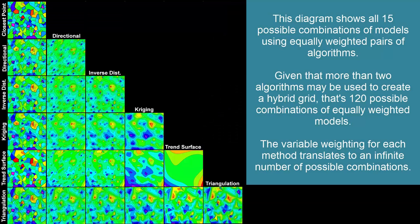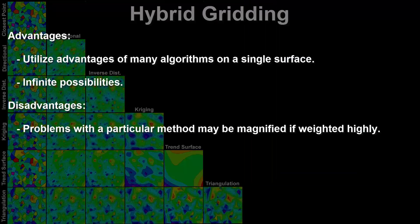This diagram shows all 15 possible combinations of models using equally weighted pairs of algorithms. Given that more than two algorithms may be used to create a hybrid grid, that's 120 possible combinations of equally weighted models, and the variable weighting for each method translates to an infinite number of possible combinations. Advantages: hybrid gridding allows you to utilize the advantages of many algorithms on a single surface, providing infinite possibilities. The main disadvantage is that if there's a problem with a particular method, it'll be magnified if it's weighted highly.